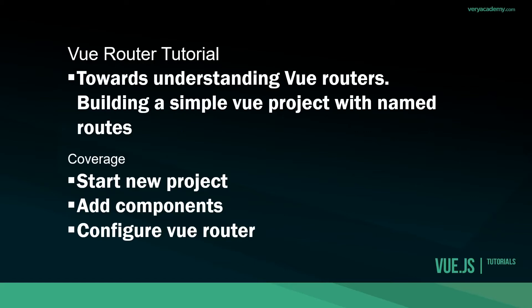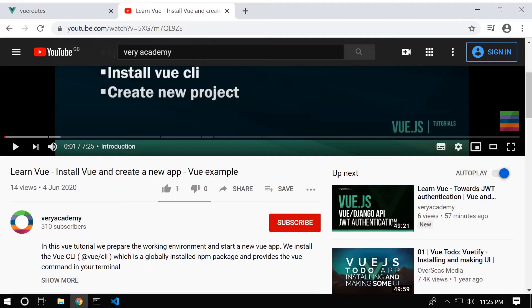The Vue router can be tricky to understand. This is a tutorial for beginners. We're going to work towards understanding Vue routers. In this tutorial we're going to be building a simple Vue project with named routes. We're going to cover starting a new project, adding new components, and configuring the Vue router for named routes. If you're completely new to Vue, please head over to the 'Learn Vue - Install Vue and Create a New App' tutorial first, then come back.